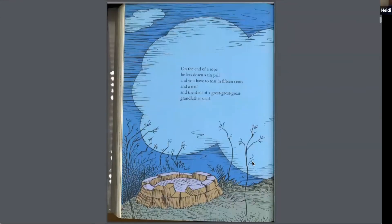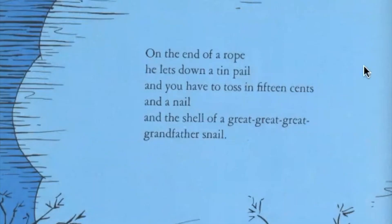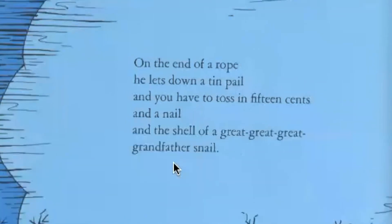Moving to the next page, we see some of the text — the language, the words being used. On the end of a rope he lets down a tin pail, and you have to toss in 15 cents and a nail and the shell of a great great great grandfather snail. What's interesting in terms of language is we see three rhymes: pail, nail, snail. That connects all of it together and keeps a little lightness to the situation.